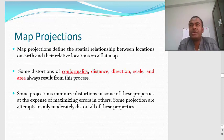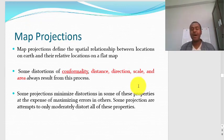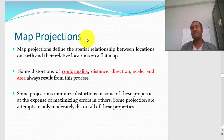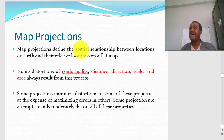Map projections work only for projected coordinate systems. Map projections define the spatial relationship between locations on Earth and their corresponding location on a flat map. We need map projections when converting from a geographic coordinate system to a projected coordinate system. During map projection, some distortions are inevitable — conformality, distance, direction, scale, and area distortions are always present. You can preserve one property while allowing others to be distorted.